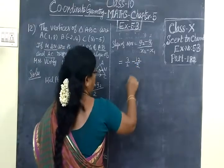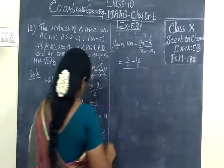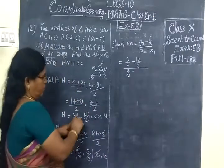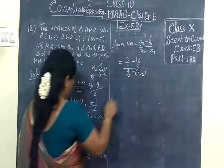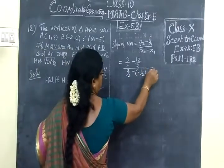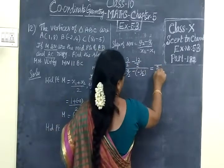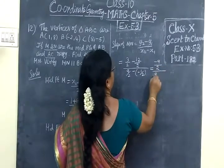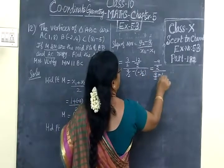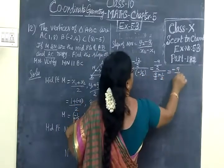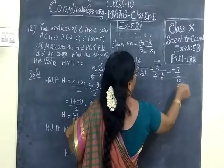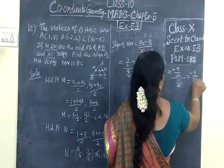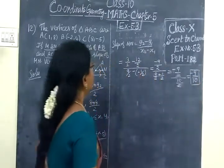The calculation continues: (3/2 - 13/2) divided by (9/2 - 0). That gives us (-10/2) divided by (9/2). Taking the reciprocal when dividing fractions, we get -10/2 × 2/9, which equals -10/9. So the slope of MN is -9/10. The same answer should come for slope of BC.